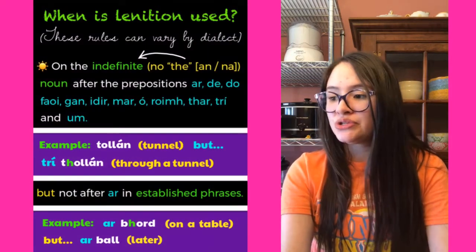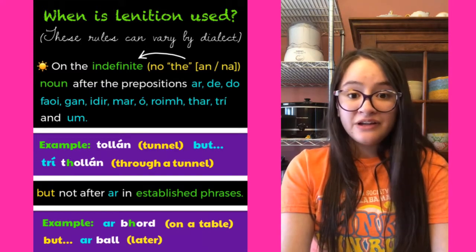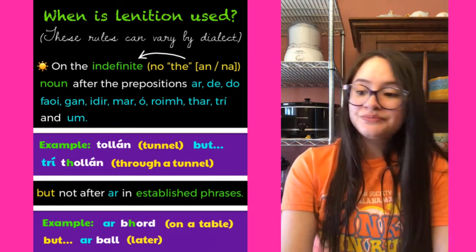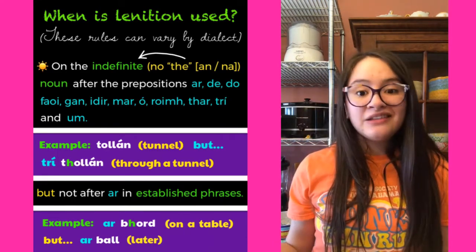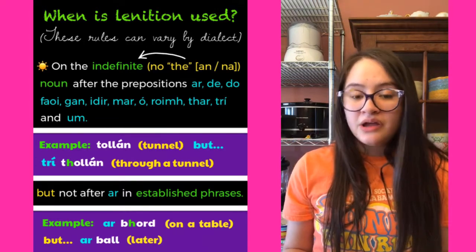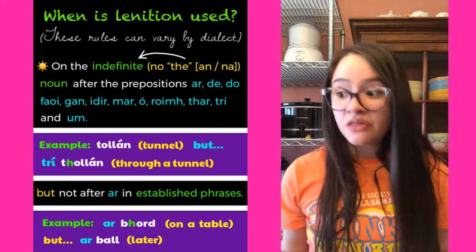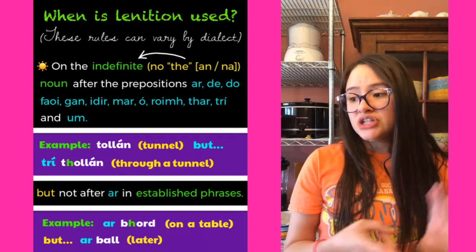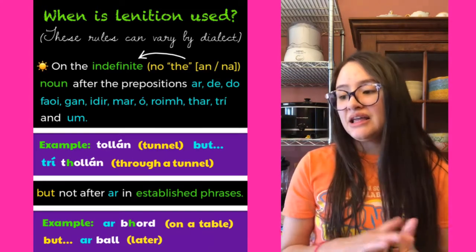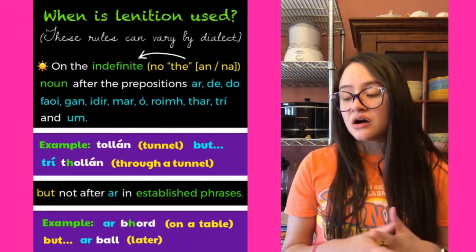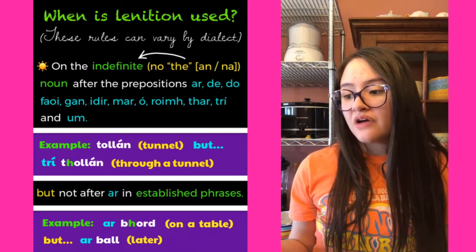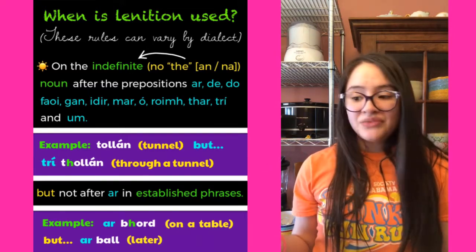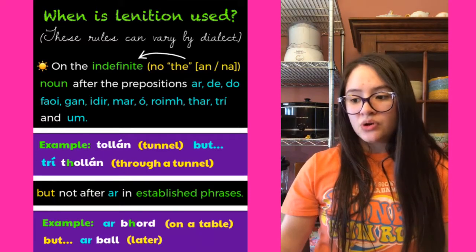When is lenition used? Keep in mind these rules can vary by dialect — I've tried to stick mostly to standard Irish. The first rule: lenite on the indefinite noun (no article — no 'an' or 'na') after the prepositions ar, de, do, faoi, gan, idir, mar, ó, roimh, thar, trí, and um. For example, 'tollán' means tunnel, but 'trí thollán' — through a tunnel — comes after the preposition 'trí,' so we lenite it.